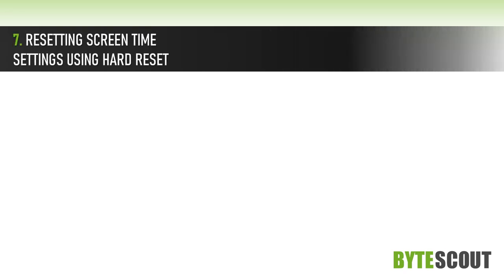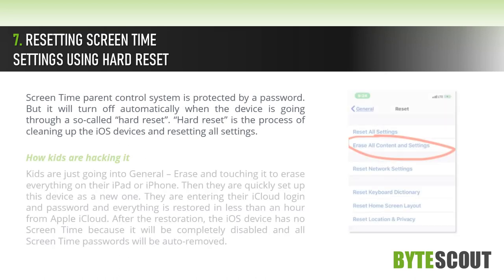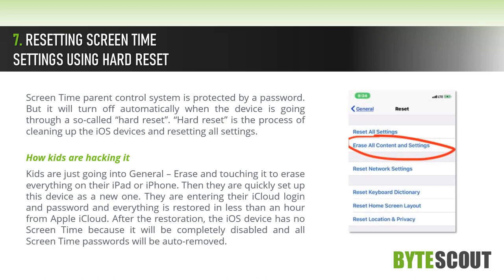Resetting Screen Time settings using a hard reset. The Screen Time parental control system is protected by a password, but it will turn off automatically when the device goes through a hard reset. Kids are just going into General, Erase, and touching it to erase everything on their iPad or iPhone. Then they quickly set up the device as new, enter their iCloud login and password, and everything is restored in less than an hour from Apple iCloud.